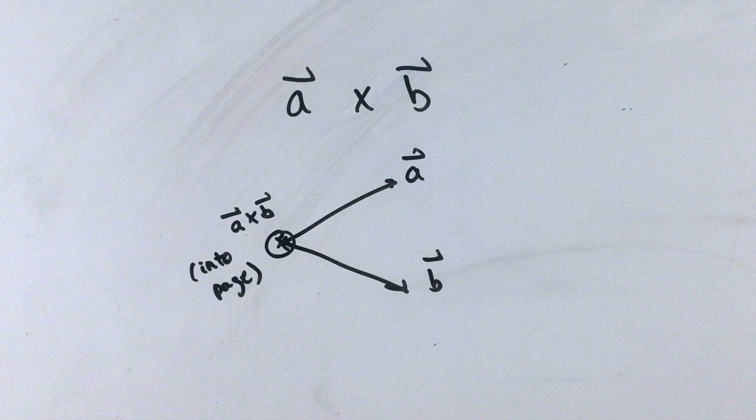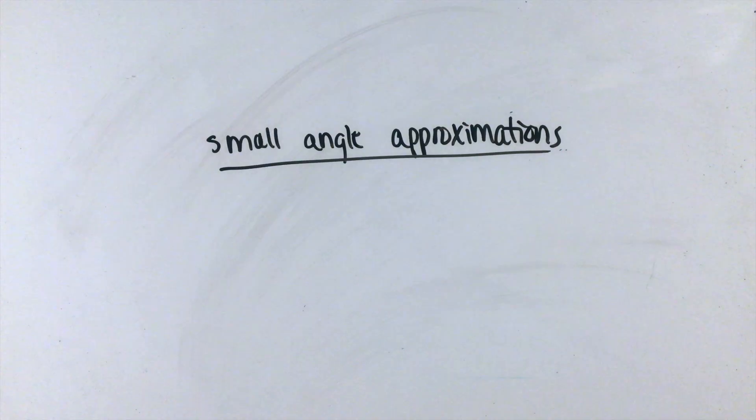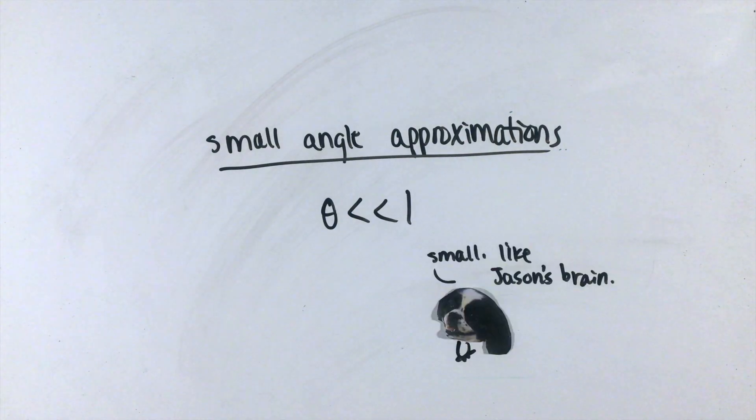Finally, one decently common concept that is rarely covered in math classes is known as small angle approximations. In certain units, especially simple harmonic motion, physics approximates things when quantities get super small. Specifically, when angles are very small, usually written in problems like this, there are a couple cool tricks we can use to simplify problems.